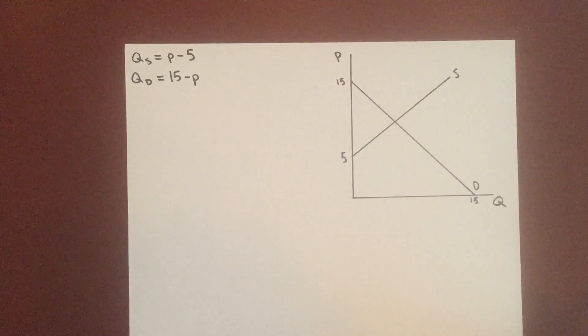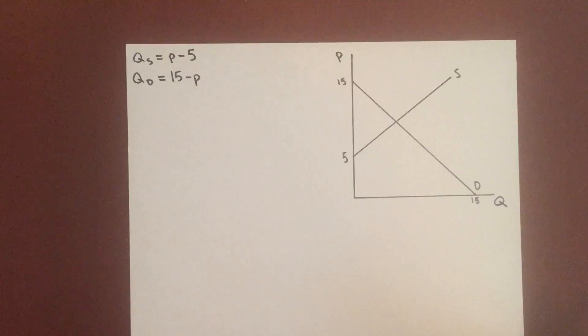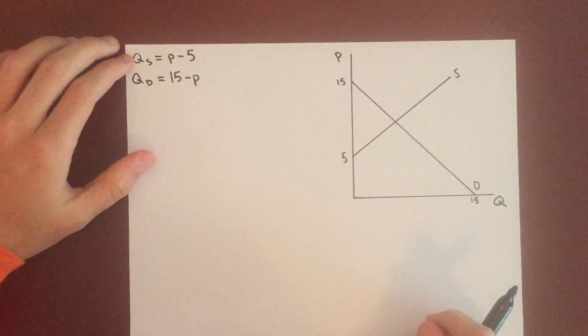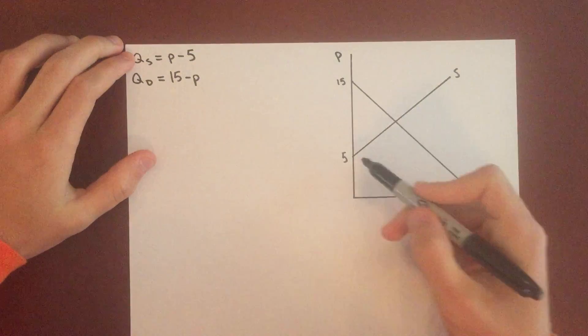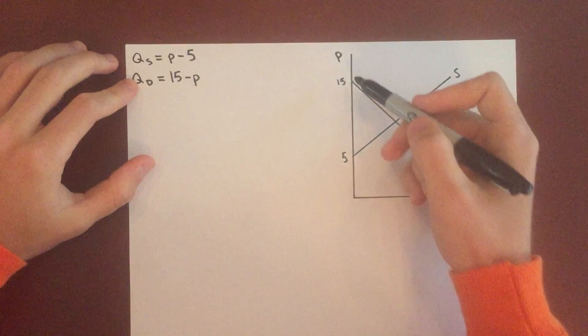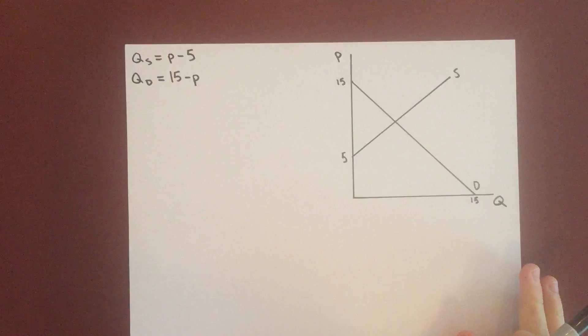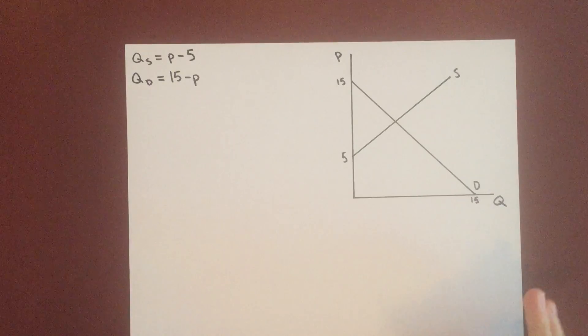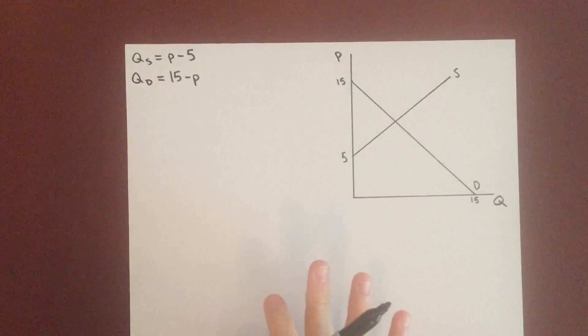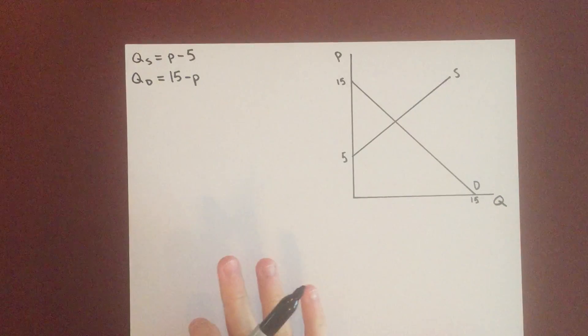So in this video we'll go over an example of a price floor. Our supply curve here is P minus 5, as you can see right there, and our demand curve is 15 minus P, downward sloping as usual. And we're just gonna try and find how a price floor will affect the equilibrium.